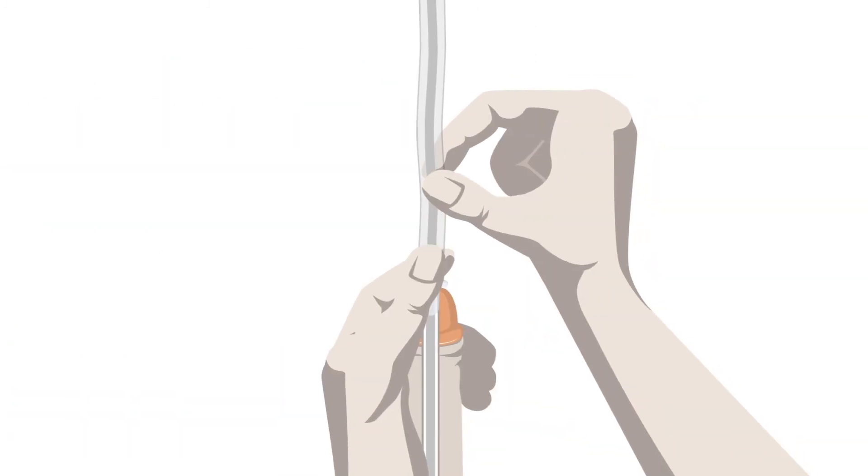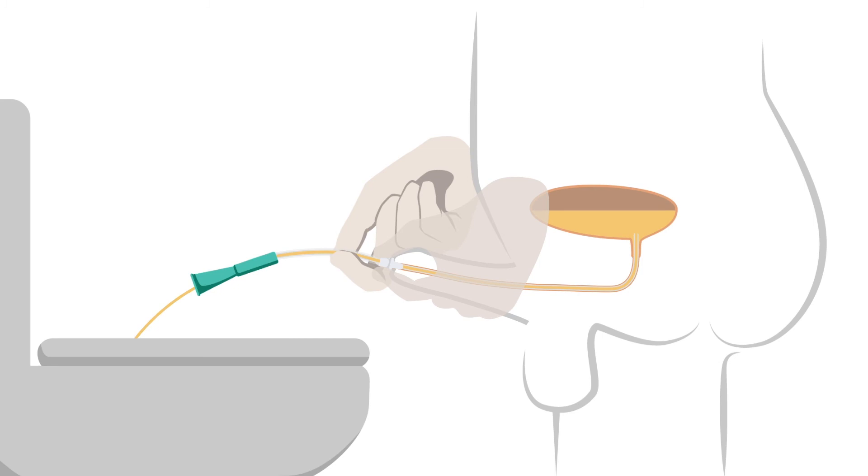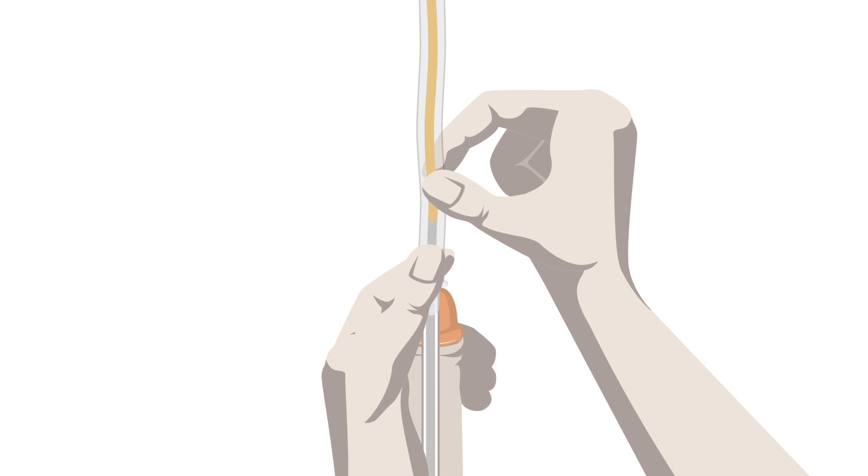As it enters the bladder, you will see urine flow into the catheter. Continue to hold it in place. Once again, check the catheter funnel is inserted into the toilet or a receptacle. When the urine flow stops,